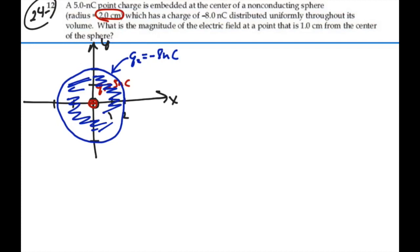We want to find the electric field at some point P, which is located at x equal to 1 centimeter — I'll mark that in green. To deal with this problem, we need to use the principle of superposition: look at each contribution — one from the point charge at the center and one from the distribution of charge — find the electric field due to each, and then superimpose them together.